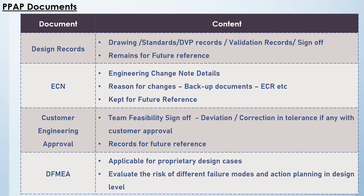The second document is ECN, Engineering Change Notice. All engineering change notice details have to be updated, including the reason for change. If an engineering change request is given from the supplier side, that has to be kept along with this document for future reference. The third document is customer engineering approval. Initially, a team feasibility study is done between the design team, supplier quality assurance team, and supplier cross-functional team. The process feasibility is studied and signed off, and if there is any deviation due to process limitation, that has to be recorded with a proper deviation and sign-off with the customer.